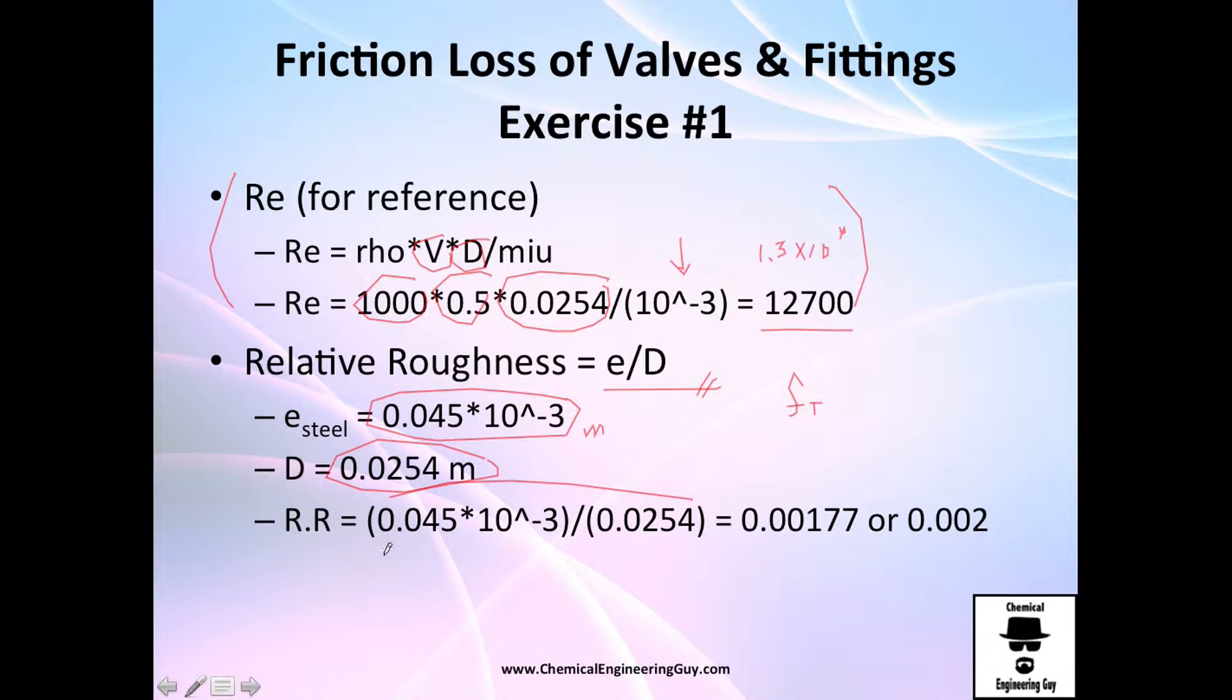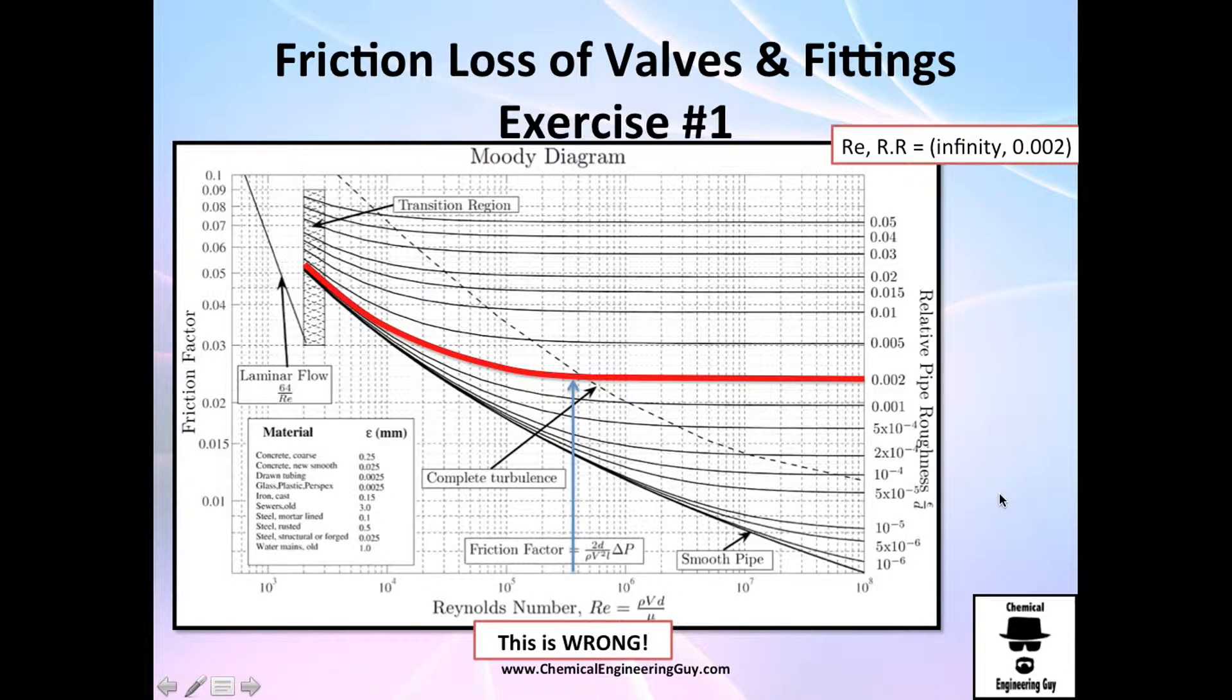The diameter once again is one inch, which changed to meters is this number, and we need to divide epsilon by D. We got this value right here. And since this is 0.0017, actually it's better to round up to 0.002.